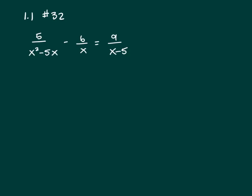So we're trying to solve for x, and the first thing you want to do is factor all of your denominators. Here we have a common factor of x, so take out an x, and you can't factor any of the other ones.